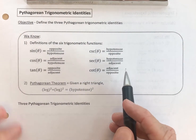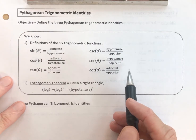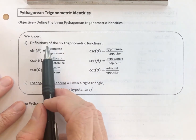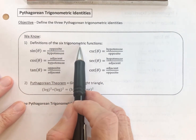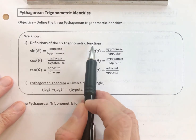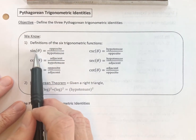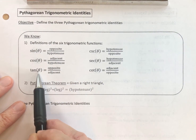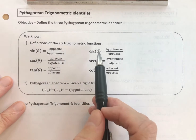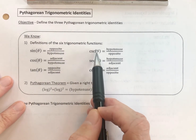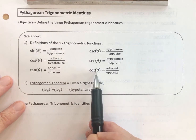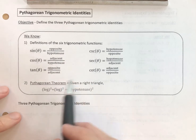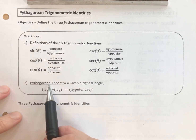Let's talk about what we know that's going to assist us here. We know the definitions of the six trigonometric functions — sine, cosine, tangent, and their reciprocals: cosecant, secant, and cotangent. And we know what the Pythagorean theorem is.